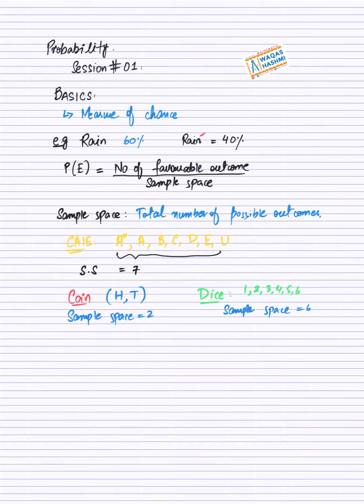Ab aate hai, ke ye jo, upar likha hua number of favorable outcomes. Ab, coin se start karte hai. Coin se start karte hai, ab mein aapse kahun, what is the probability, ke aap a coin ko flip karo, probability of getting a tail. Ab ye jo, tail hua aapka, ye kya hua? Now that is called favorable outcome, ke ab mein focus kar raha huu, tail ke upar. Toh isko hum kehenge, ke tail humare paas favorable outcome hai.